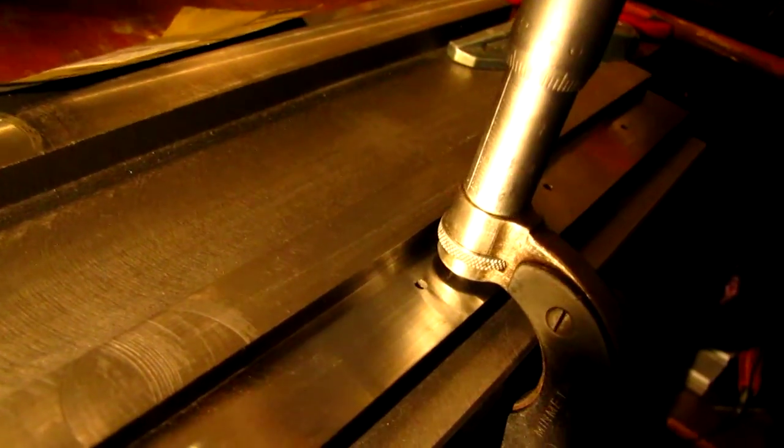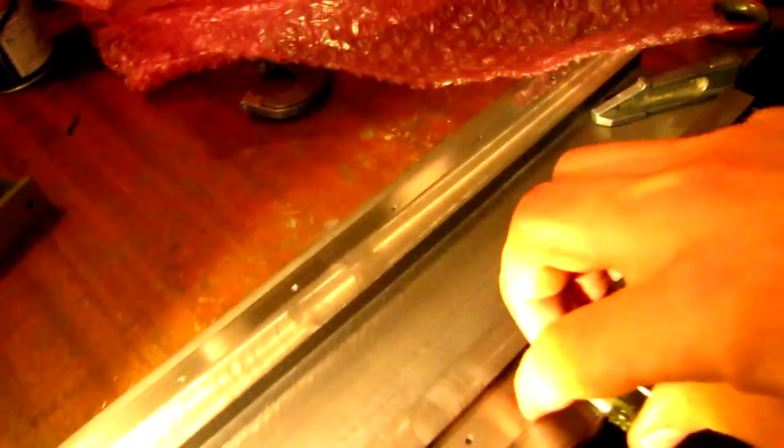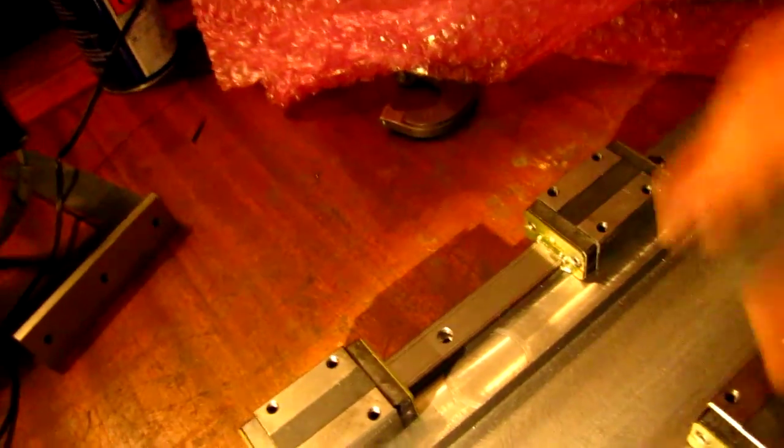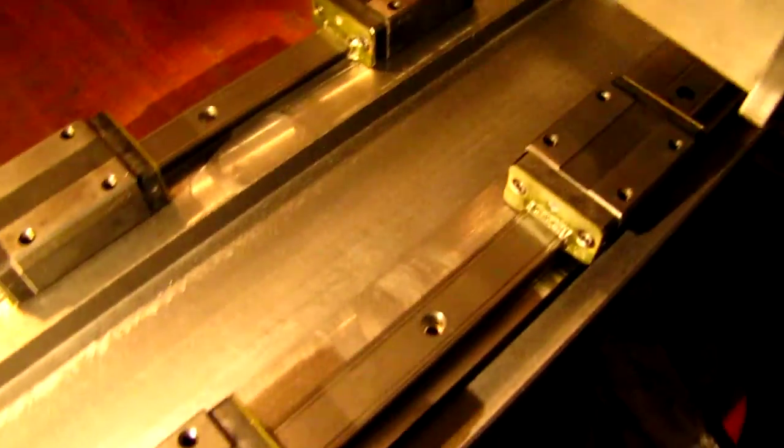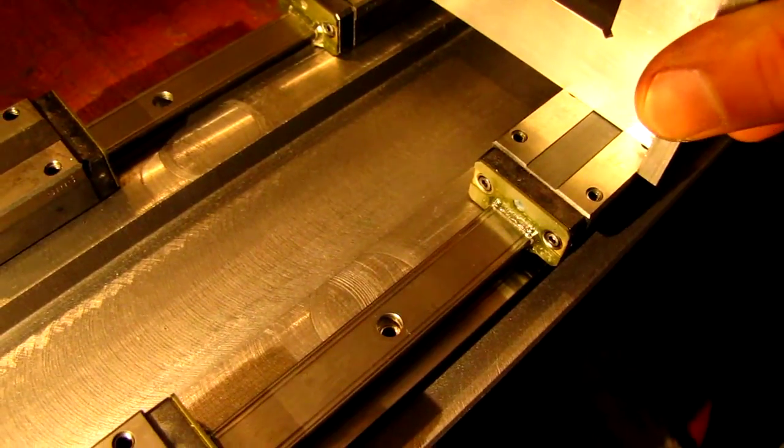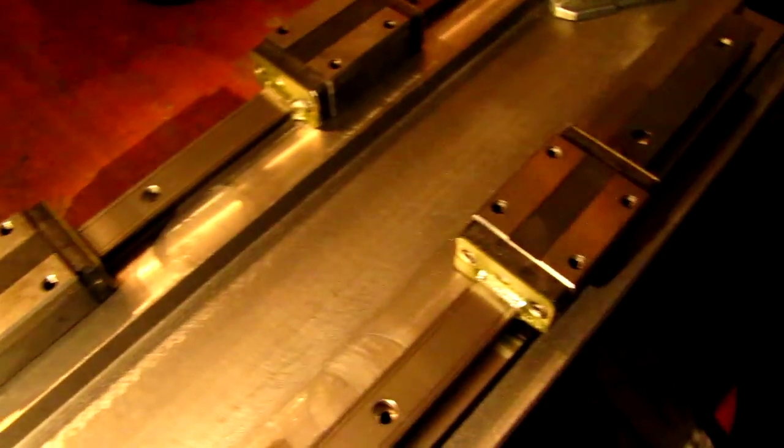And now I'm about to temporarily mount the linear rails and check if they are fitting nicely, because I still have to check if in the end the blocks are parallel to each other so I don't have a deviation here. So I'll mount the screws and check for flatness.